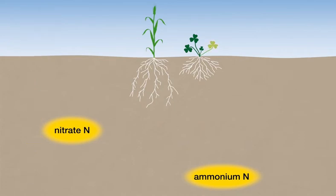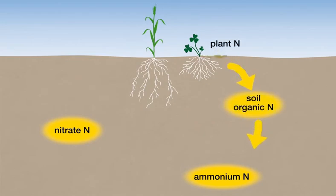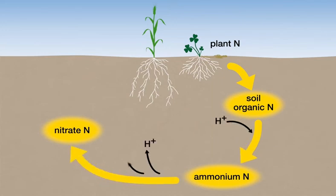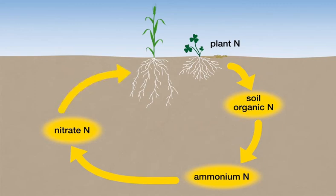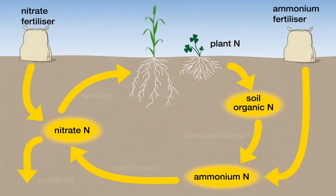The breakdown and chemical pathway of nitrogen in organic plant residues is complicated and both uses and releases hydrogen ions. But if the nitrate is taken up by plants, there is no net acidification. The breakdown of urea fertilizer is similarly complicated and non-acidifying if the nitrate is taken up, but is acidifying if the nitrate leaches.